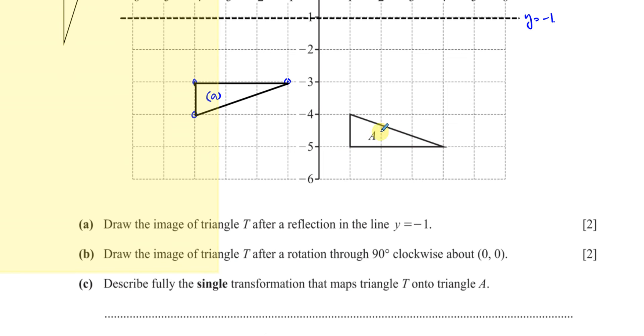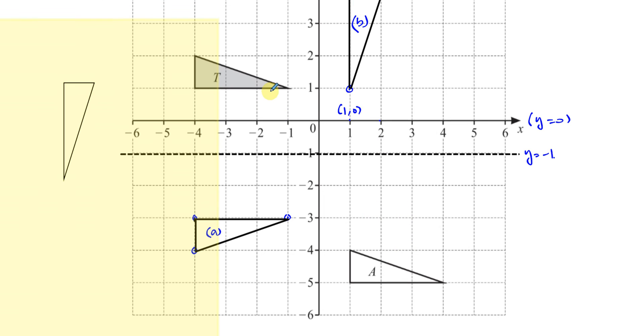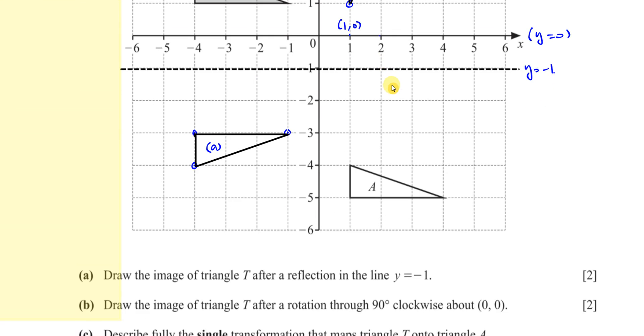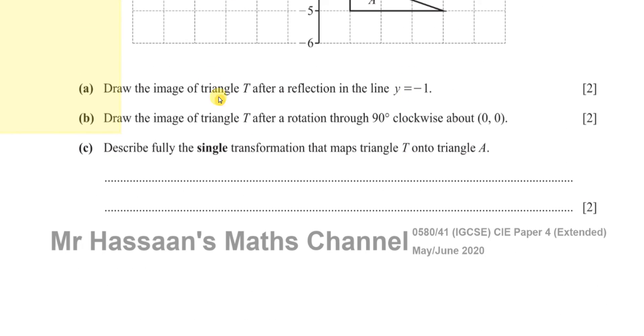Then it says, describe fully the single transformation that maps T onto A. Now, T and A both have the same type of orientation. It's like T has been just picked up and moved over there. It hasn't been reflected. It hasn't been rotated. It's the same shape and the same size and the same orientation. So this is what is caused by what's called a translation. A translation is where something is just moved, not rotated, not reflected.